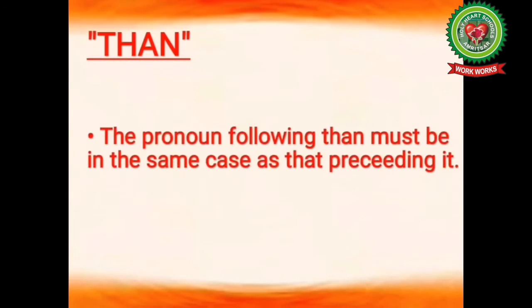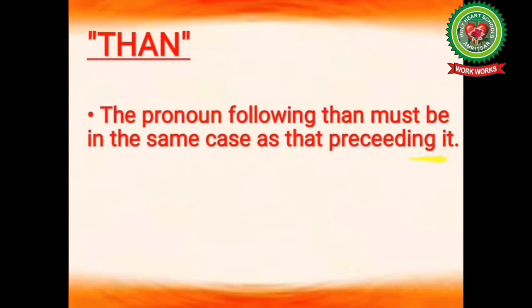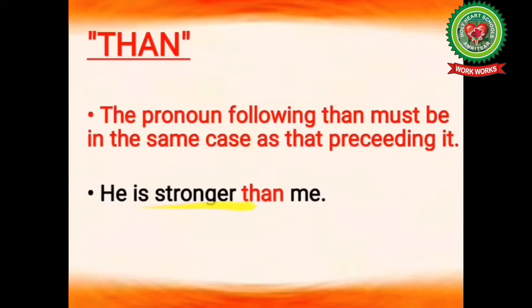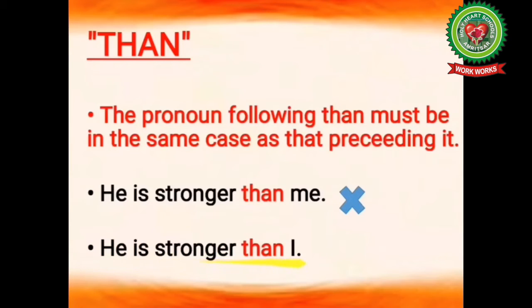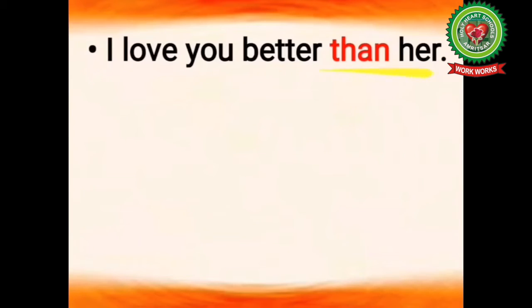The next conjunction is 'than'. The pronoun following 'than' must be in the same case as that preceding it. Than is used as a subordinating conjunction. See the example: 'he is stronger than me' — is it correct? No. Here we must use the subjective case. The pronoun before 'than' is 'he', which is in the subjective case, so the pronoun after 'than' should also be in the subjective case. The subjective case of 'me' is 'I', so the correct statement is: he is stronger than I.